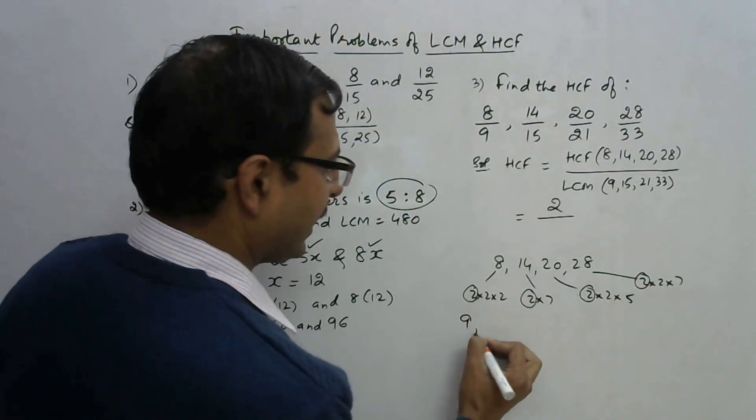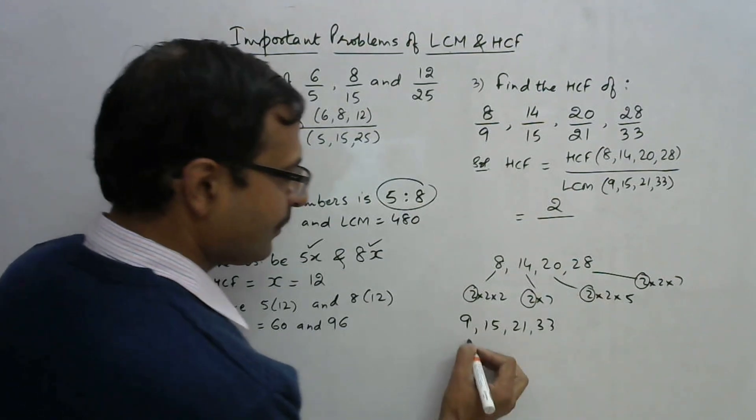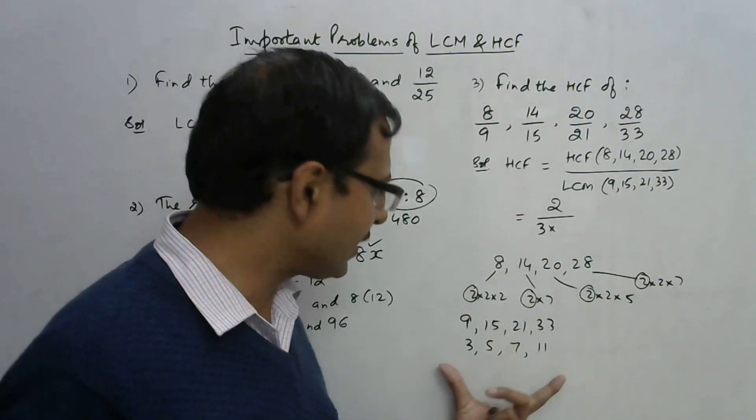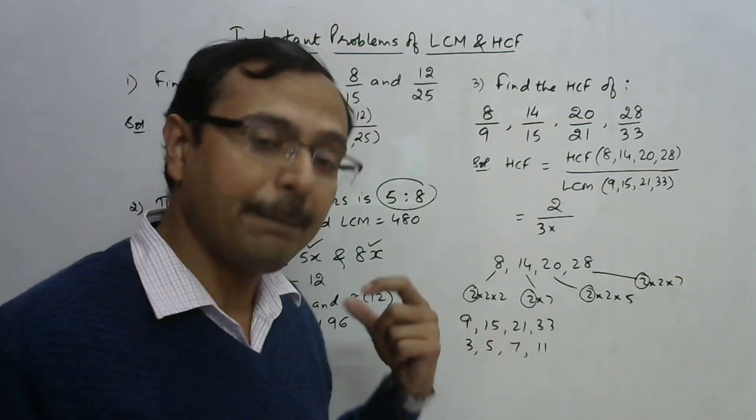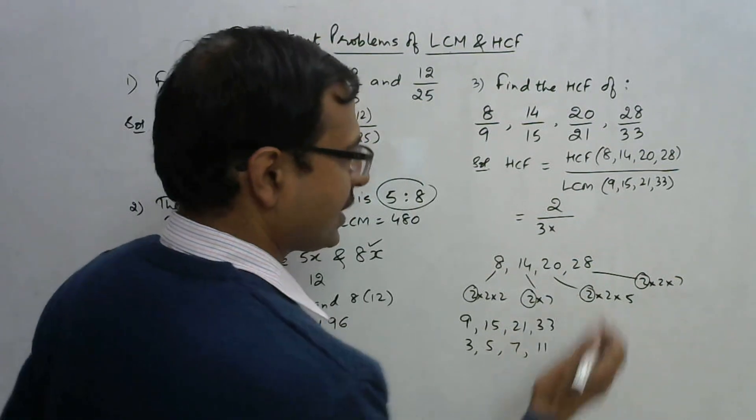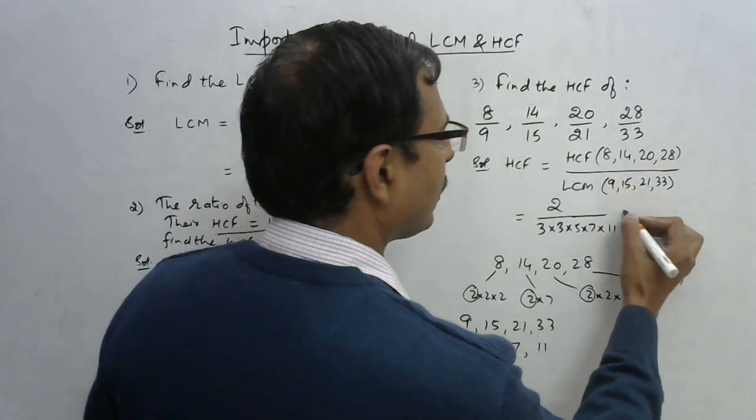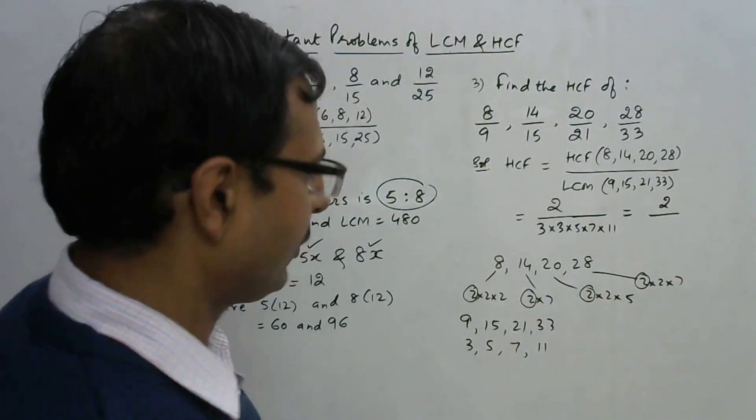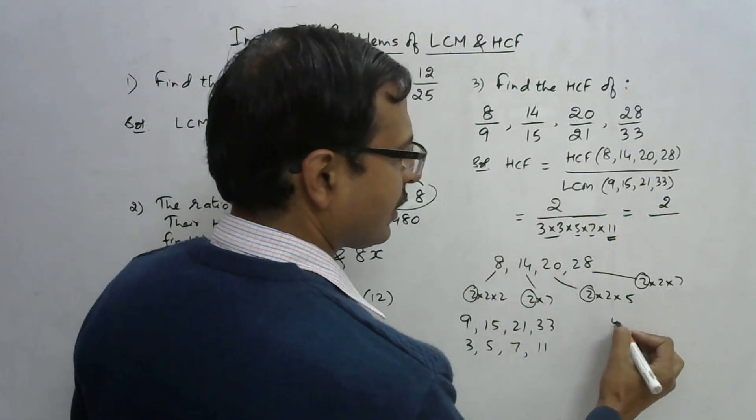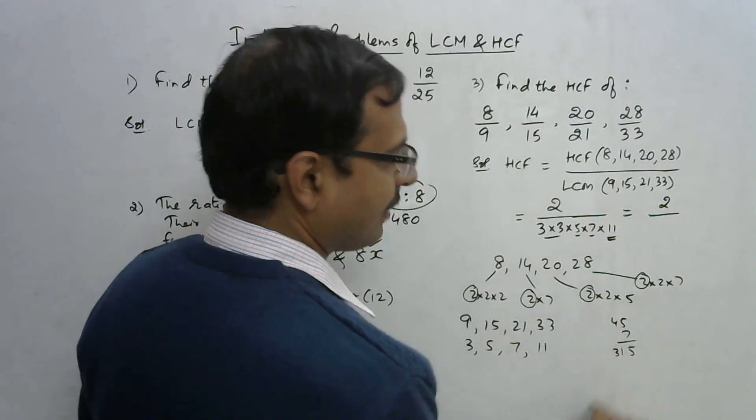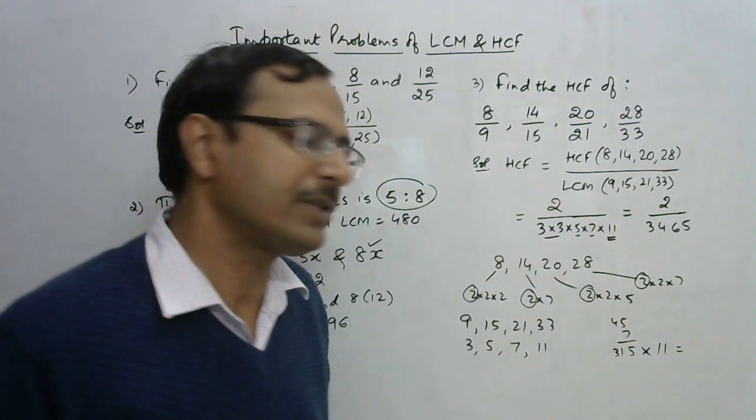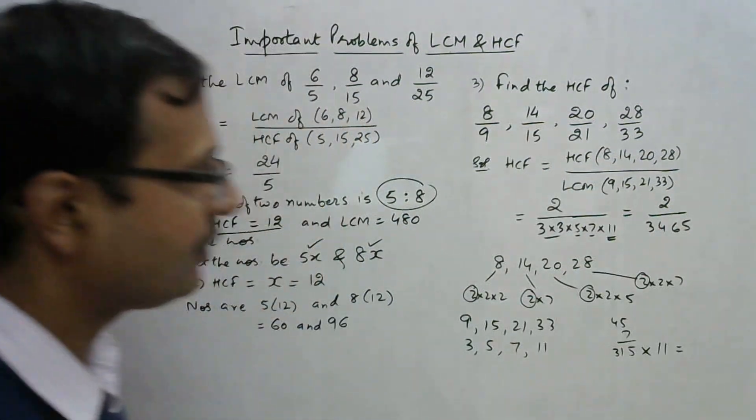Now LCM: 9, 15, 21, and 33 are all divisible by 3. So 3 has to come in the LCM. The remaining numbers are 3, 5, 7, and 11. They are all prime numbers, and when we tackle prime numbers, their LCM is their product. So 3 × 5 is 15, times 7 is 105, no wait, 9 × 5 is 45, into 7 is 315, and 315 into 11 is 3465. So 2 upon 3465 is the HCF of these four numbers.